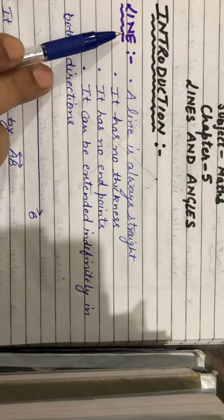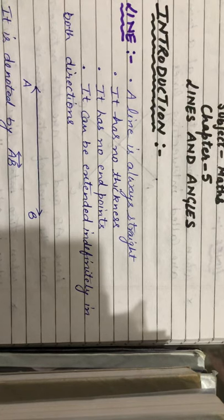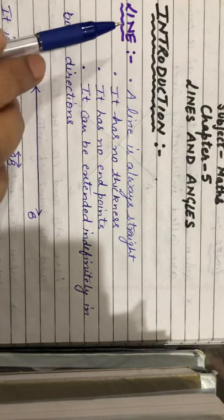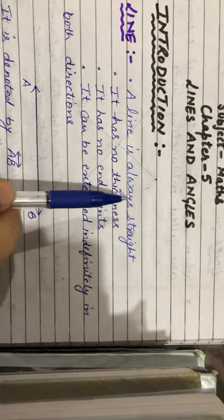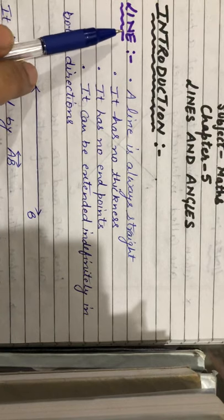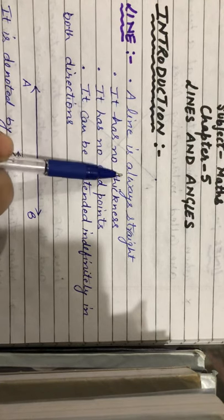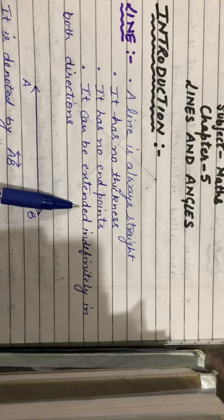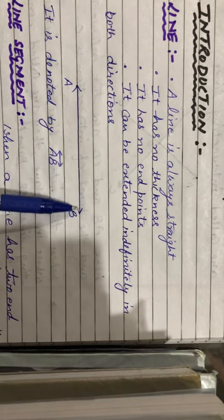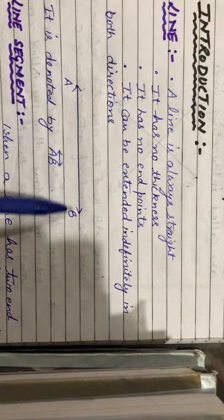In your previous class you have learned about point, what is a line, line segment, and ray. So let us discuss in brief what is a line. A line is always straight. You might have seen curved lines, but here we are talking about a straight line. It has no thickness and no endpoint — it can be extended indefinitely in both directions. Here AB is a line, denoted by line AB with arrows on both sides.